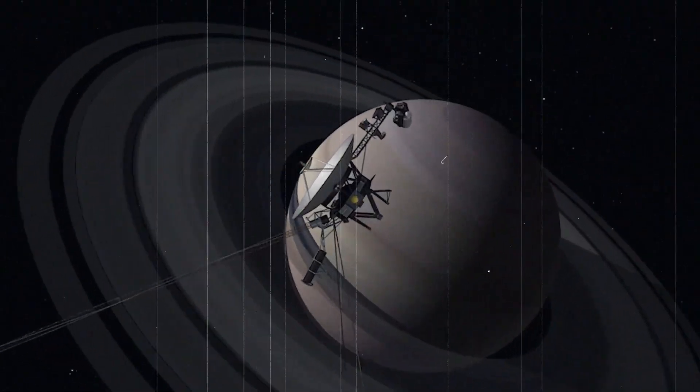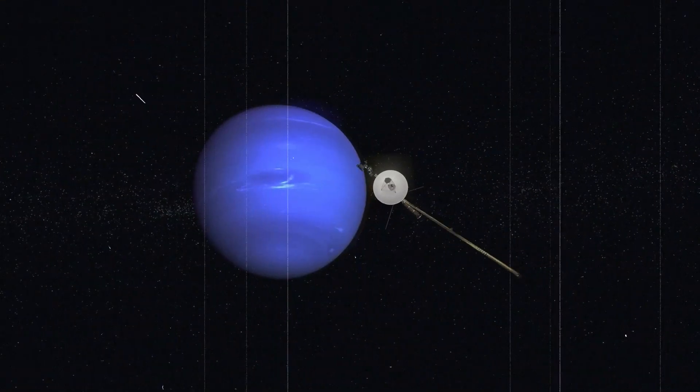Voyager 2 was the one that was chosen to do the grand tour, that is to fly by Jupiter and then Saturn and then Uranus and then Neptune.